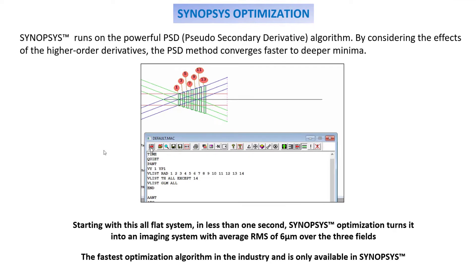Let's look at the system. It has seven flat glass plates, not much of an optical system to speak of. However, if you put it in Synopsys and run the optimization,